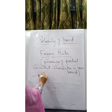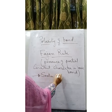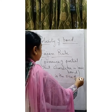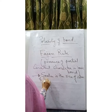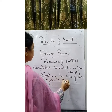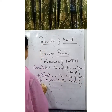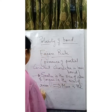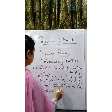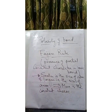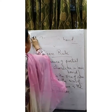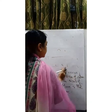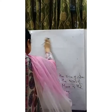The first rule states: smaller is the size of the cation and larger is the size of the anion, more is the covalent character in the ionic bond. Smaller cation size and larger anion size leads to more covalent character of the ionic bond.